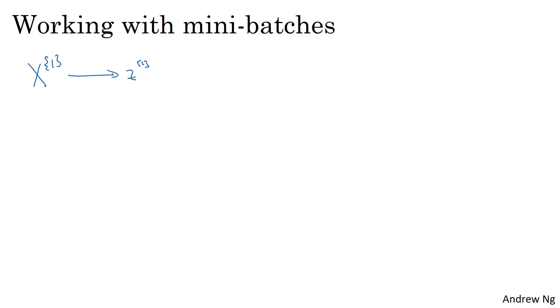The way you actually apply batch norm is you take your first mini-batch and compute z1, same as we did on the previous slide using the parameters w1, b1. Then you take this, just this mini-batch and compute the mean and variance of the z1s on just this mini-batch. And then batch norm would subtract by the mean and divide by the standard deviation, and then rescale by beta 1, gamma 1, to give you z tilde 1. All this is on the first mini-batch. Then you'd apply the activation function to get a1. And then you compute z2 using w2, b2, and so on. You do all this in order to perform one step of, say, gradient descent on the first mini-batch.